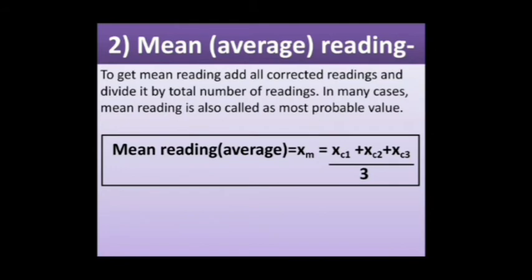To get the mean reading, add all the corrected readings and divide by the total number of readings. In many cases, the mean reading is also called the most probable value.